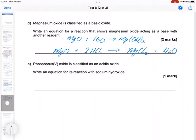And then E: Phosphorus 5 oxide is classed as an acidic oxide. Write an equation for its reaction with sodium hydroxide. So P4O10 plus NaOH gives Na3PO4. Remember, this makes the phosphate and water. And if you then go through and balance this, you'd need 12 sodium hydroxide, 4 sodium phosphates, and 6 waters.